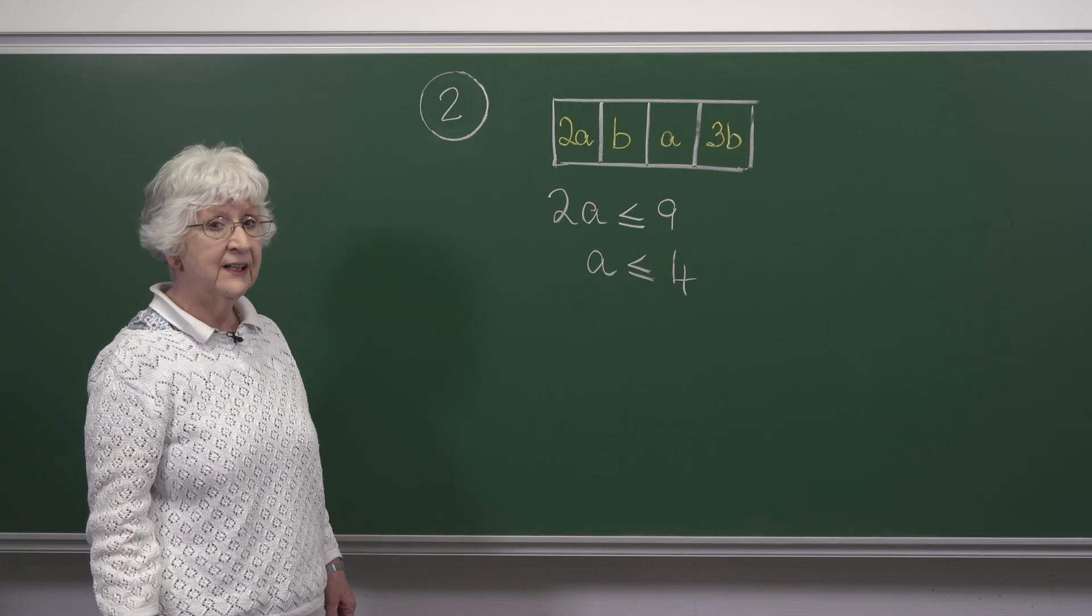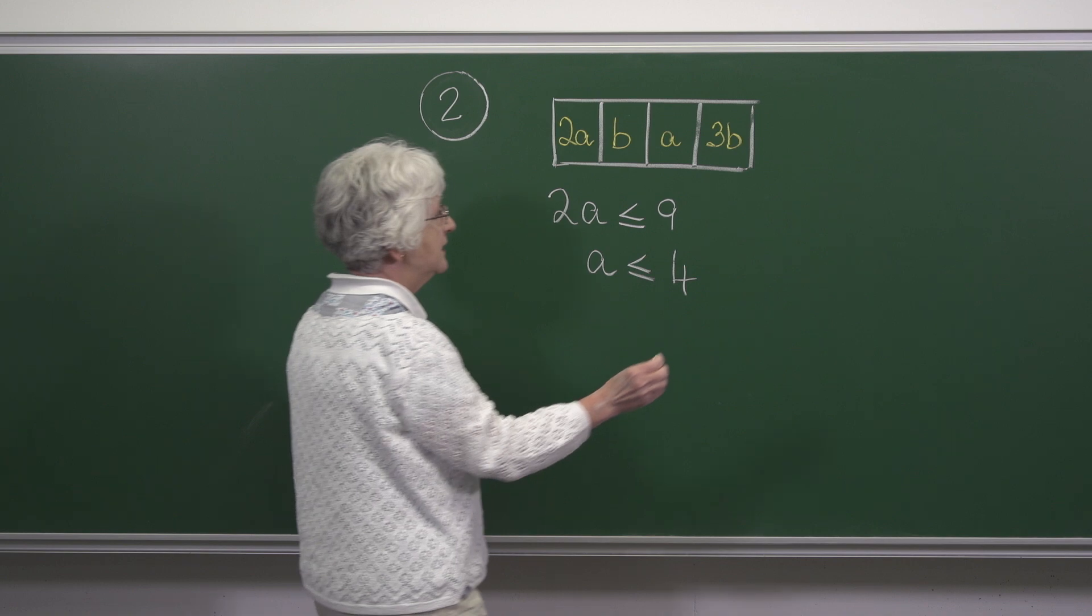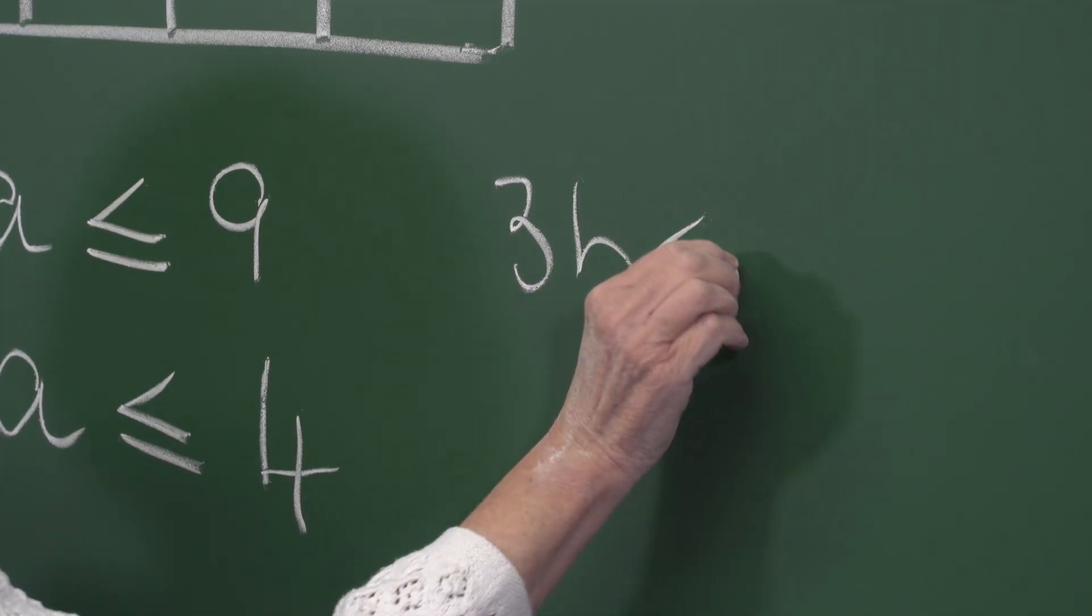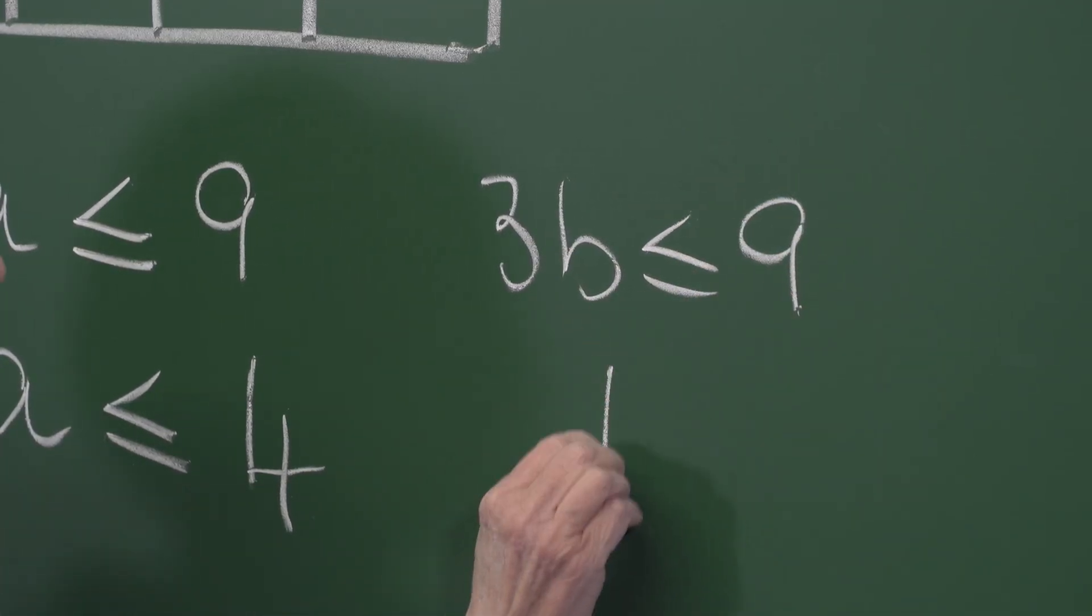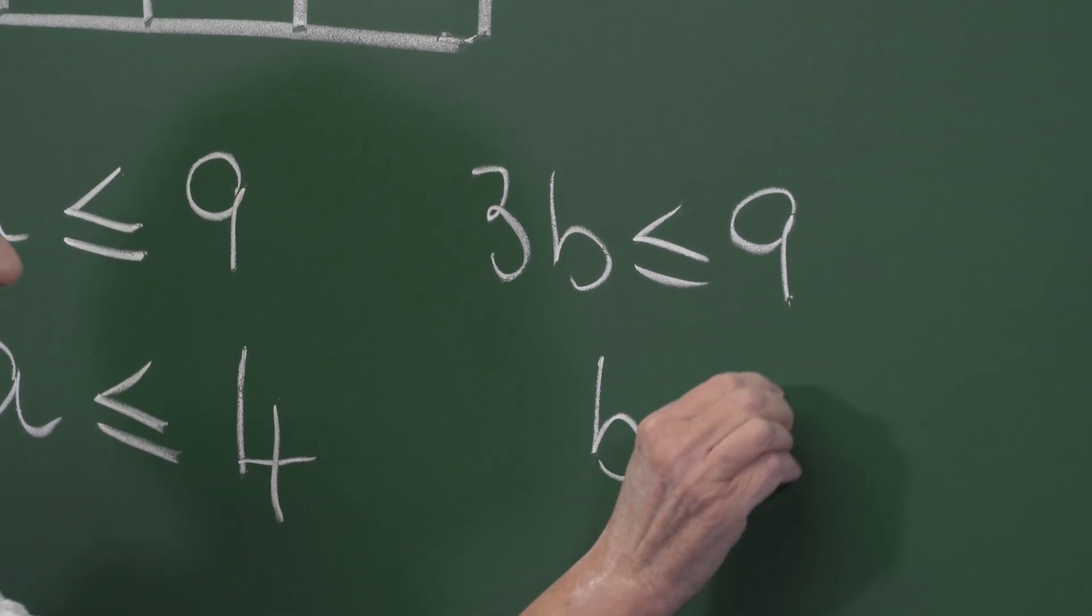In the same way 3b is a digit so 3b is less than or equal to 9 so b is less than or equal to 3.